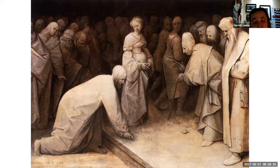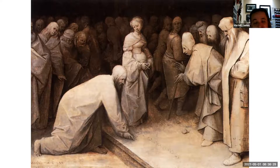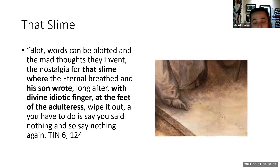In its biblical allusion, it conflates both the soil of the creation in Genesis performed by the Godfather, with the ground on which Jesus wrote twice — his only written words, by the way, in John 8:6 and 8:8. And here is its textual appearance: 'Blot. Words can be blotted and the mad thoughts they invent. The nostalgia for that slime was the eternal breathed as he who wrote long after, with divine idiotic finger at the feet of the adulterers. Wipe it out. All you have to do is say you said nothing, and so say nothing again.'